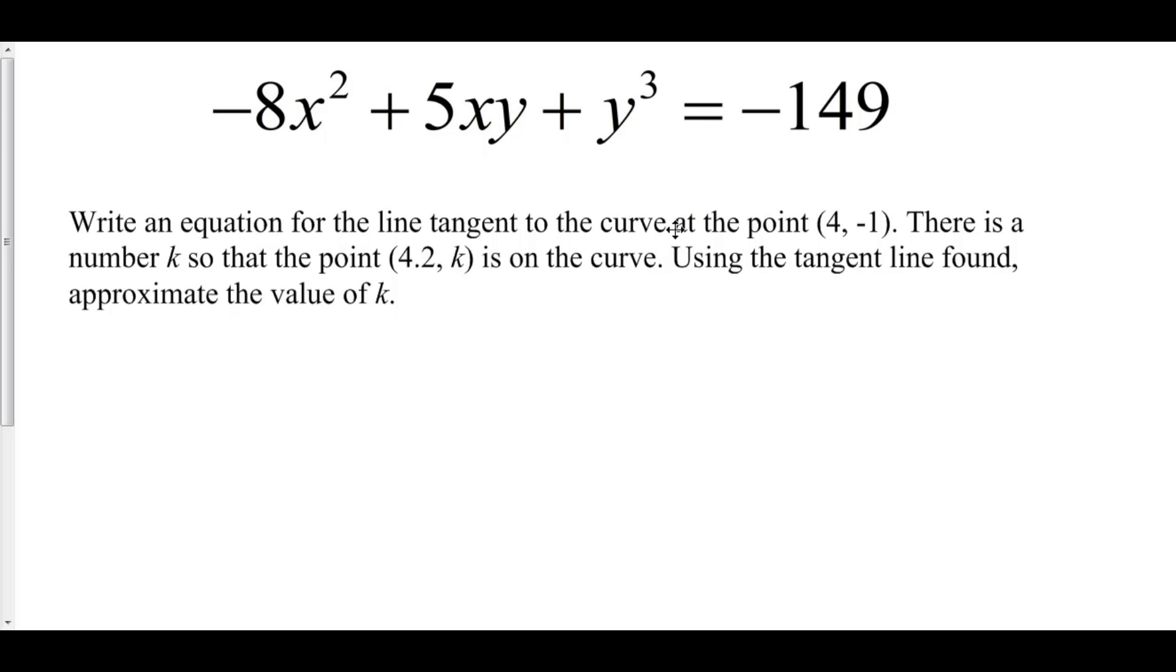Now there are two things that we need for a tangent line. We need a point, which has been given to us, and we need a slope. Now to find the slope, we have to take the derivative implicitly of this curve.